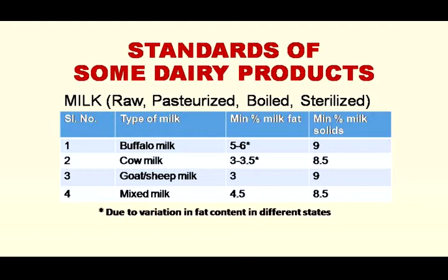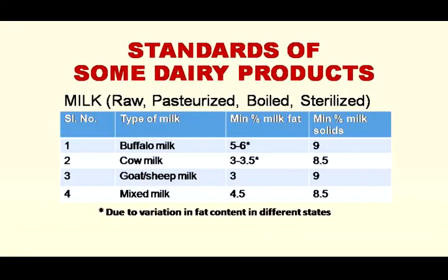Number one is dairy products. First is milk — whether raw milk, pasteurized milk, boiled milk, or sterilized milk. There are different types: buffalo milk, cow milk, goat milk, sheep milk, mixed milk, and also toned milk, double toned milk, or full cream milk. For buffalo milk, the minimum percentage of milk fat is 5–6% and minimum milk solids not fat is 9%. The variation is due to fat content differences across states.